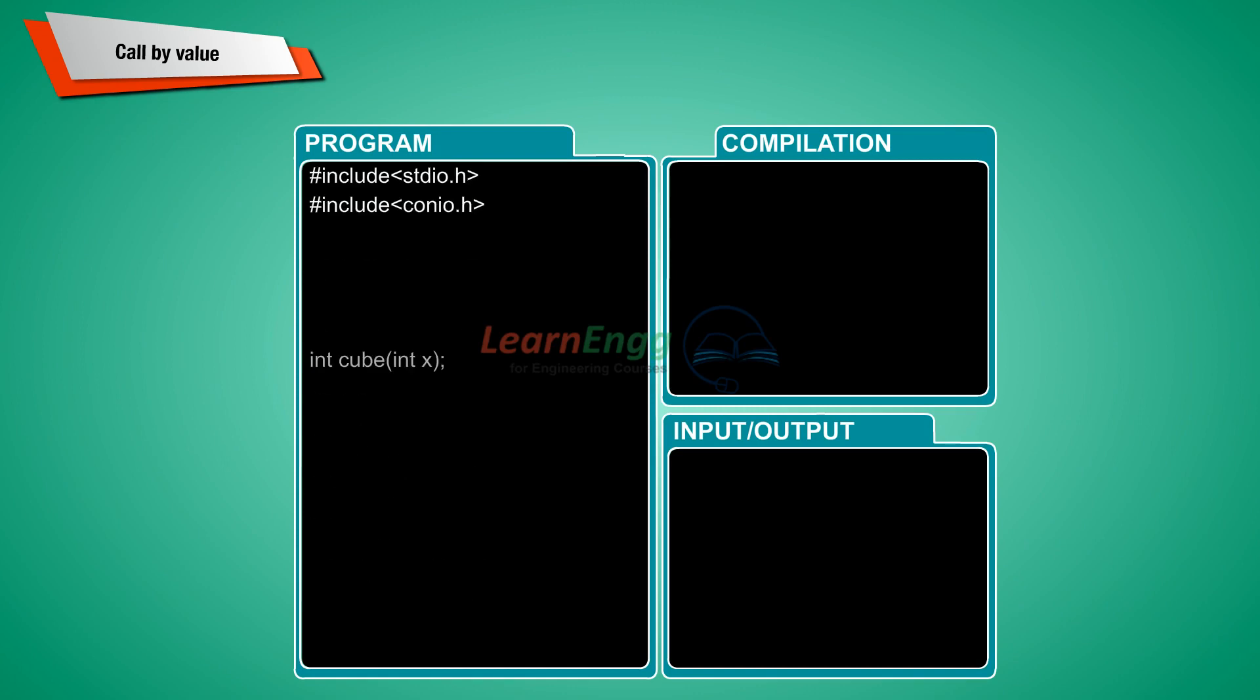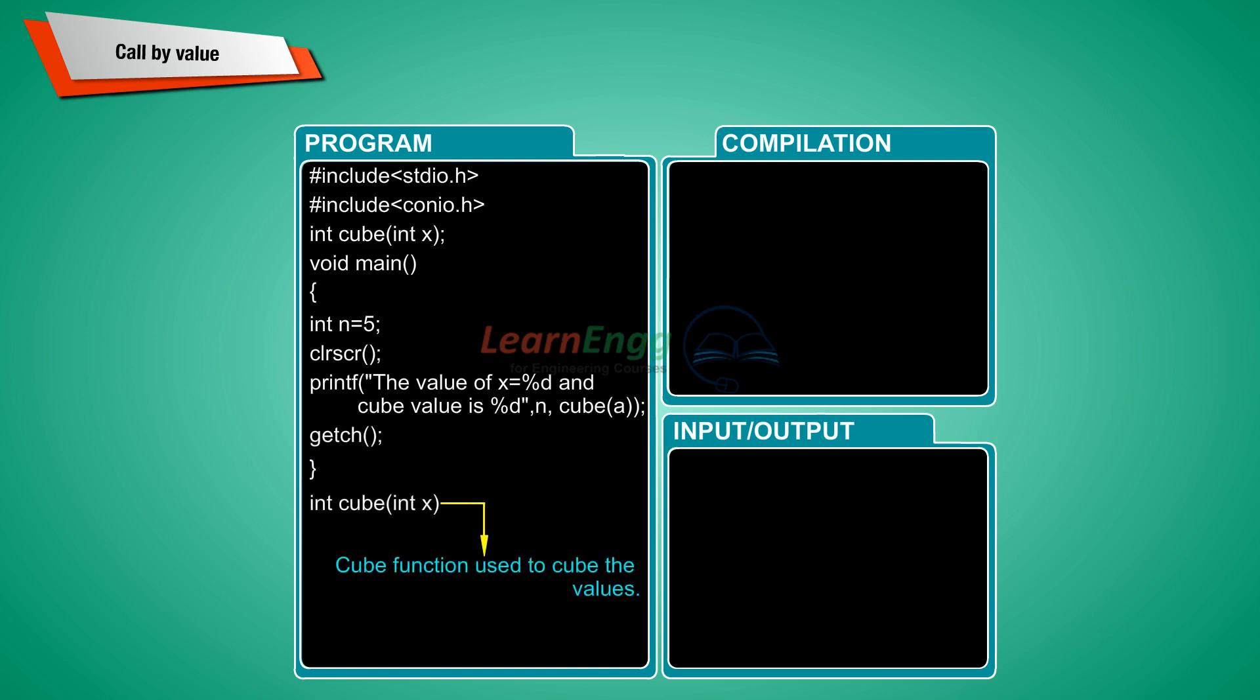Those header files are used to connect standard C library. In this example program, cube function is declared globally and the return type of this function is int and values can be returned from the function. The value of argument to the function cube(5) is copied to the parameter x. The expression x equals x into x into x is evaluated and only the local variable x is modified.